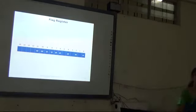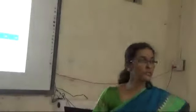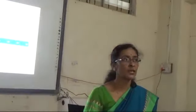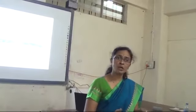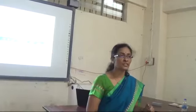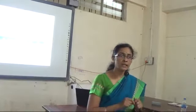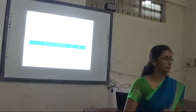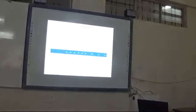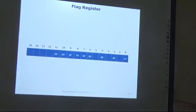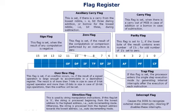One more very important register is the flag register. Whenever the ALU performs an arithmetic or logical operation, it generates a result stored in a data register, but it also generates control signals stored in the flag register. The flag register is a 16-bit register. Bit 0 is the carry flag (CF). Bit 2 is the parity flag (PF). Bit 4 is the auxiliary carry flag (AF). Bit 6 is the zero flag (ZF). Bit 7 is the sign flag (SF). Bit 8 is the trap flag (TF). Bit 9 is the interrupt flag (IF). Bit 10 is the direction flag (DF). Bit 11 is the overflow flag (OF). Bits 12–15 are not used.